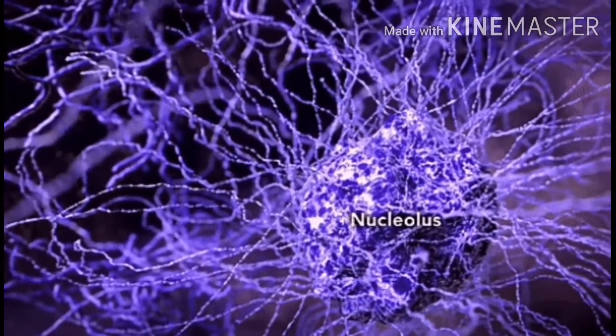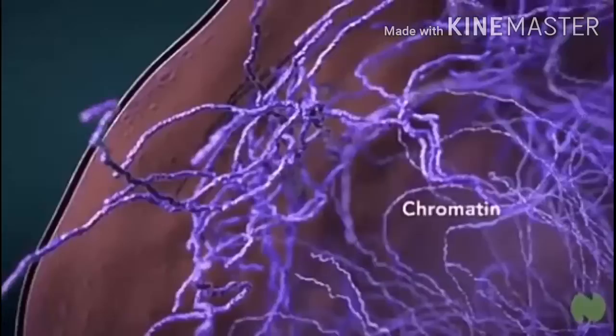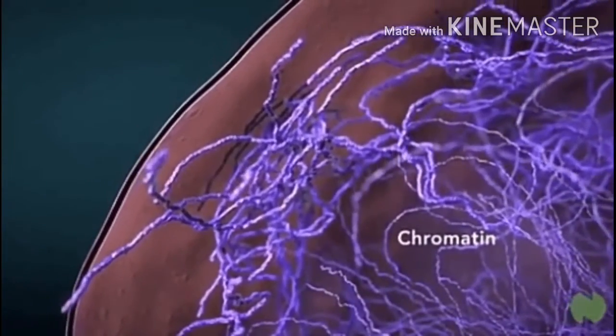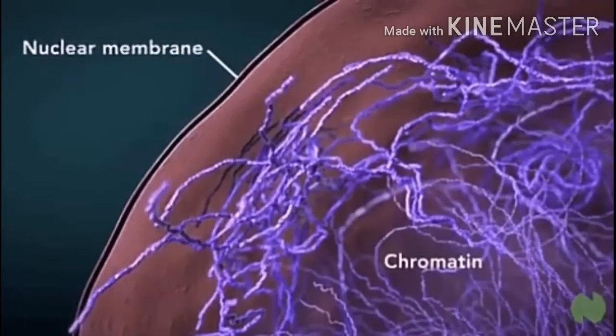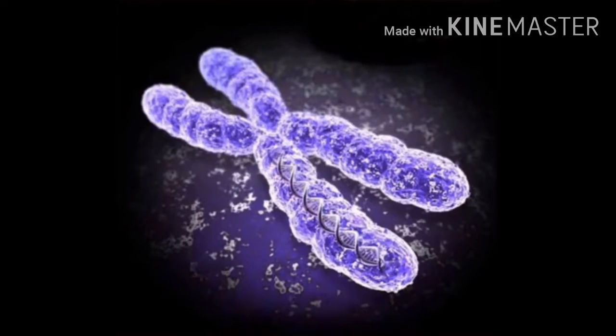The nucleus also has a thread-like network called chromatin. The chromatin organizes itself into rod-like structures when the cell has to divide. These rod-like structures are called chromosomes.